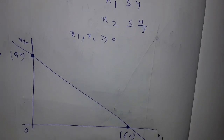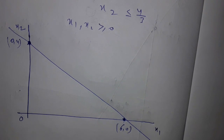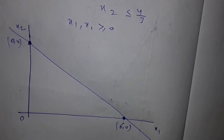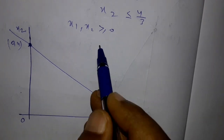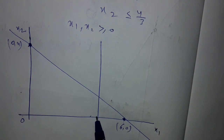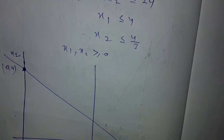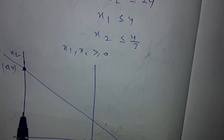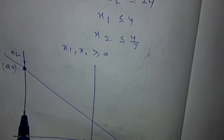Similarly, x1 less than or equal to 4 means x1 equals 4, which is a line parallel to the x2 axis drawn at x1 = 4. Another constraint gives x2 equal to 4/3, which is a line parallel to the x1 axis drawn at x2 = 4/3.